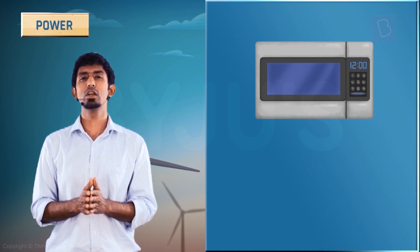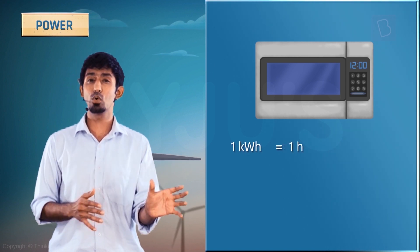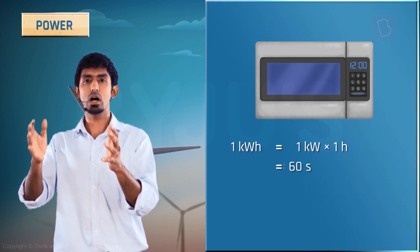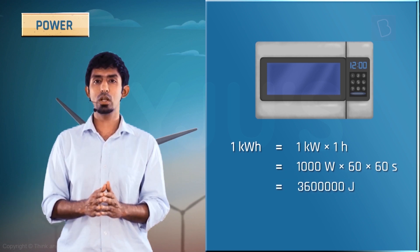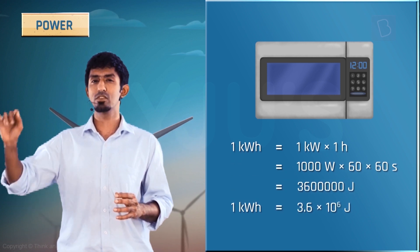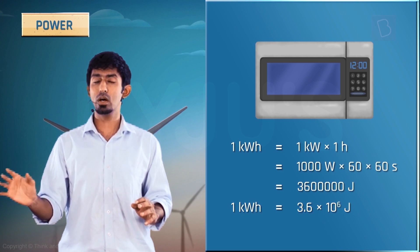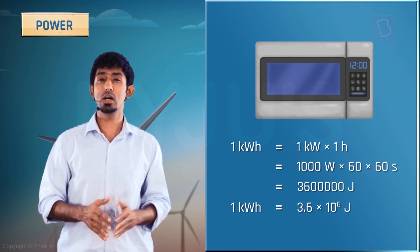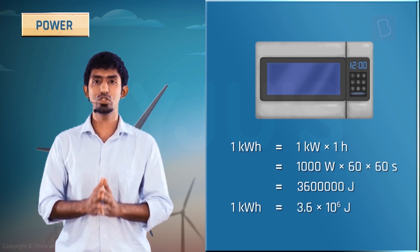So we define something called the kilowatt-hour. Just like kilowatt defines power, kilowatt-hour is a unit to define energy. One kilowatt-hour is actually 3.6 × 10⁶ joules. So the commercial unit is a lot larger than the SI unit of one joule.